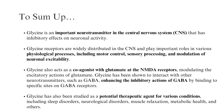To sum up: Glycine is an important neurotransmitter in the central nervous system with inhibitory effects on neuronal activity. Glycine receptors are widely distributed in the CNS and play important roles in motor control, sensory processing, and modulation of neuronal excitability. Glycine also acts as a coagonist with glutamate at NMDA receptors, modulating excitatory actions of glutamate. Glycine interacts with GABA, enhancing its inhibitory actions by binding to specific sites on GABA receptors. Glycine has also been studied as a potential therapeutic agent for sleep disorders, neurological disorders, muscle relaxation, and metabolic health.